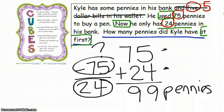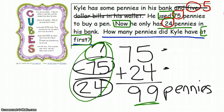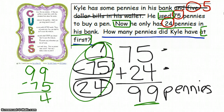That leads me to my S — I'm going to solve and check. One way I can check is to use the other operation. I was looking for this question mark and found 99, so let's test ourselves. If we do 99 minus 75: 9 minus 5 would be 4, and 9 minus 7 would be 2. That gives us 24.